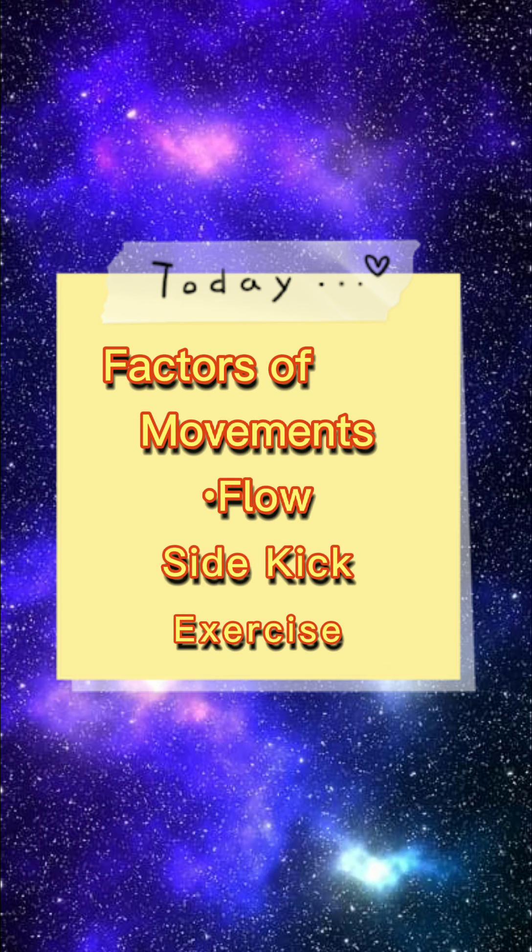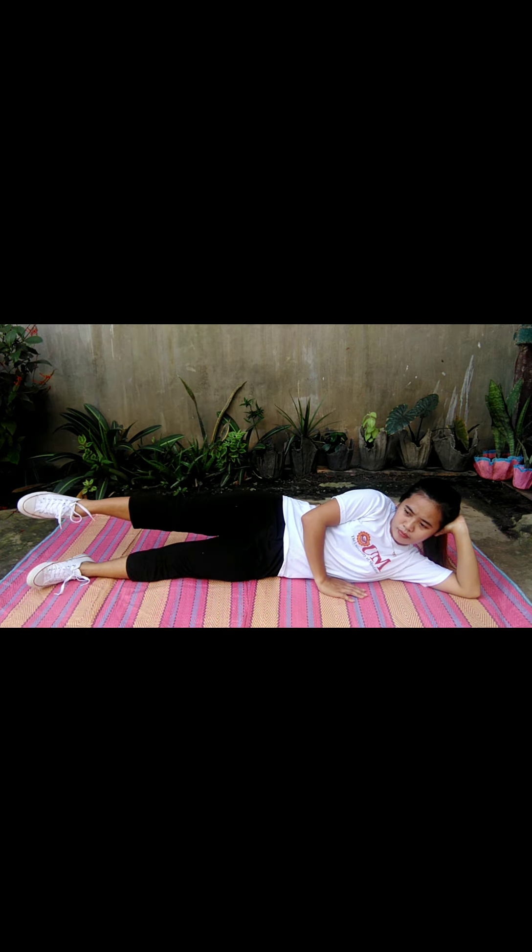The second factor of movement is flow. The exercise is side kick. Side kick exercise works all the major lower body muscle groups, particularly the quads, glutes, and outer thighs. Side kicks also automatically use the muscles of our core. We call this reactive core training, where our core gets stronger because the side kick forces these muscles to automatically respond.